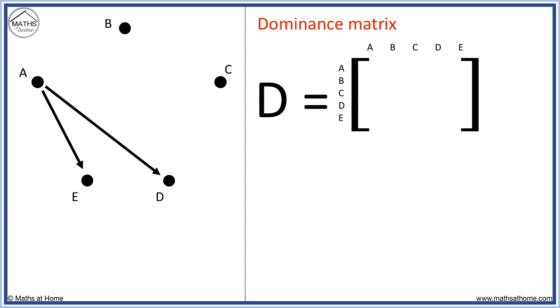Player A beat players D and E. To show this in our matrix, we put 1s underneath D and E. We put 0s under the other letters because A did not beat B or C and cannot beat themself.